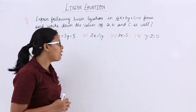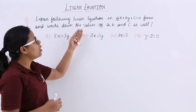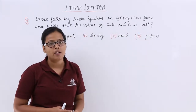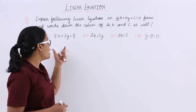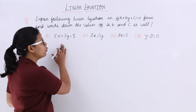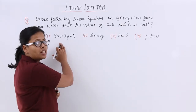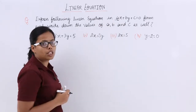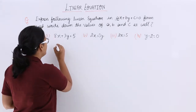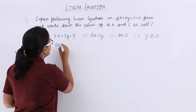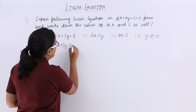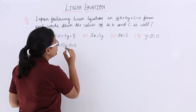So what you have to do? You have to write down the values of a, b, and c as well. Start solving the question first. You have to mention this equation in the form of ax plus by plus c equal to 0. You can write this as 8x plus 3y minus 5 equal to 0.